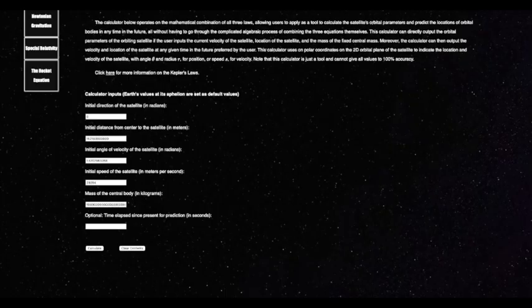To counter this problem, this online calculator has been made, with the necessary calculations already derived from the original Kepler's laws and programmed into this calculator. Now, users could just input the velocity and position of a satellite relative to the center mass at a particular point in time, along with the mass of the central mass, to obtain the orbital parameters of the satellite as predicted by the calculator's algorithm.